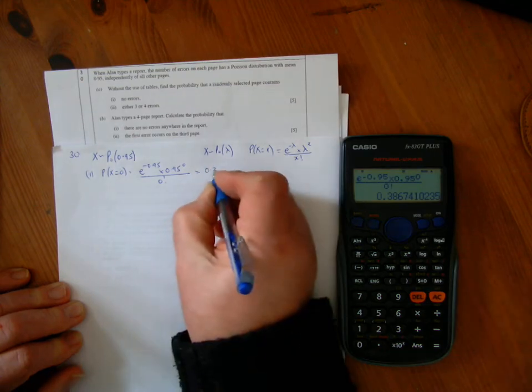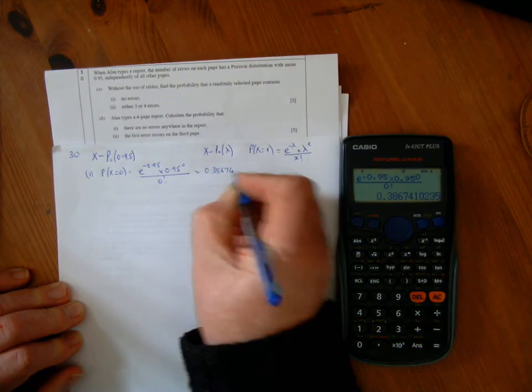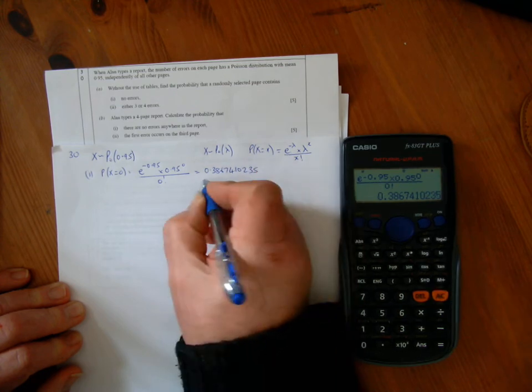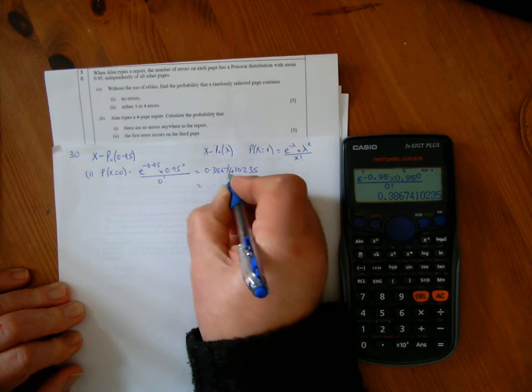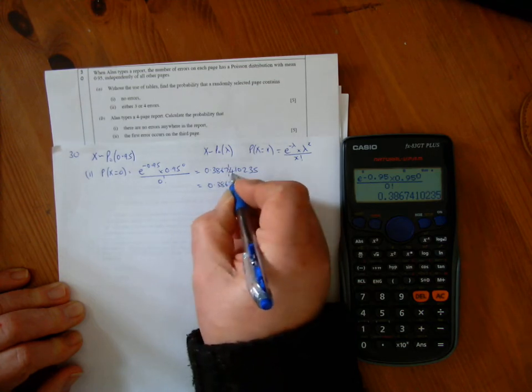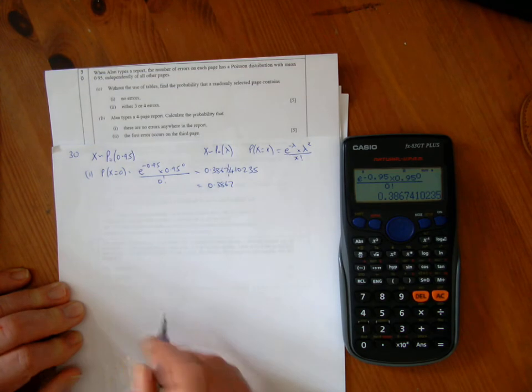That's 0.386741... Going to 4 decimal places, that's 0.3867 because the next digit is less than 5, so we leave the 7 alone.